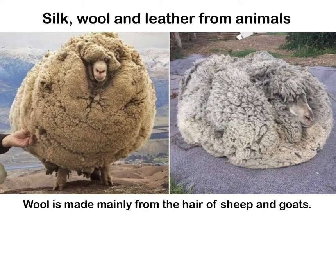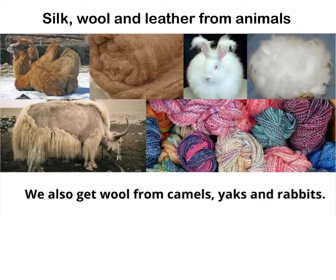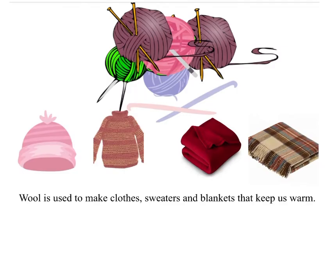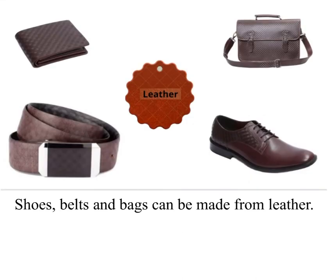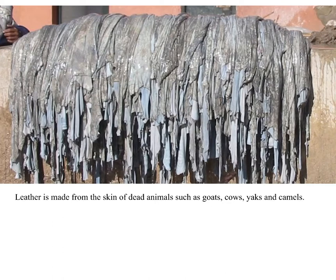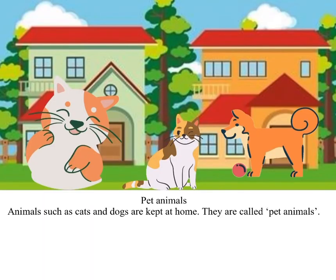Wool is made mainly from the hair of sheep and goats. We also get wool from camels, yaks, and rabbits. Wool is used to make clothes, sweaters, and blankets that keep us warm. Shoes, belts, and bags can be made from leather. Leather is made from the skin of dead animals such as goats, cows, yaks, and camels.